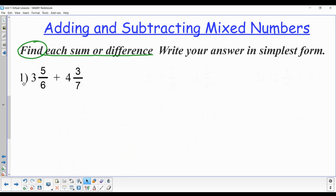So to do problem number one, 3 and 5/6 plus 4 and 3/7, the first thing I would do is rewrite the problem with blank fractions: 3 with a fraction plus 4 and a fraction. And then go to find my common denominator.